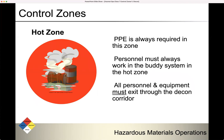In the hot zone, PPE is always required — no questions. Personnel must always work in the buddy system. Personnel and all equipment must exit through the decontamination corridor. If someone enters the hot zone, they have to wear PPE, have at least a partner, and all equipment and personnel must exit through the decontamination corridor.